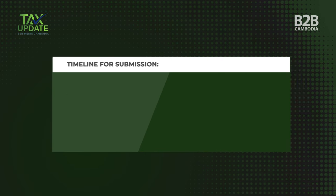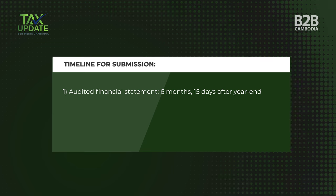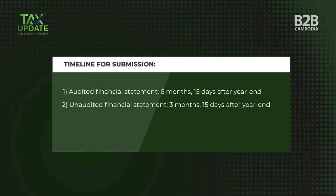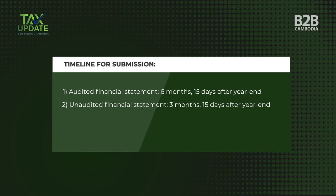All enterprises that have a financial statement, either audited or non-audited, need to submit their yearly financial statement to ACAR every year. For enterprises with an audited financial statement, the deadline to submit to ACAR is six months and 15 days after year-end closing. For enterprises with an unaudited financial statement, the deadline is three months and 15 days after year-end closing.